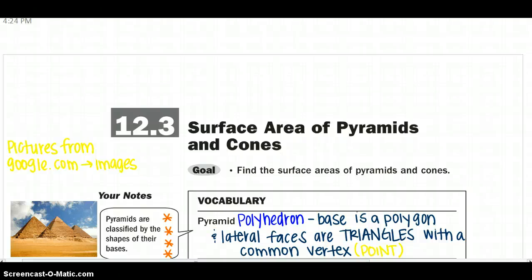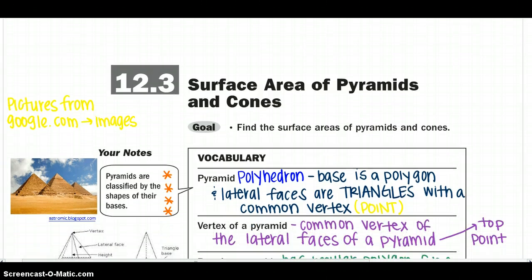All right, continuing on with 12.3, we're going to look at surface area of pyramids and cones. So really searching for that top point that we've talked about in class. One of the first things that comes to my mind when I look at pyramids, the solid shapes in geometry, is just the pyramids in Egypt, and we know that they all come to that point and all sit on a polygon on the ground.